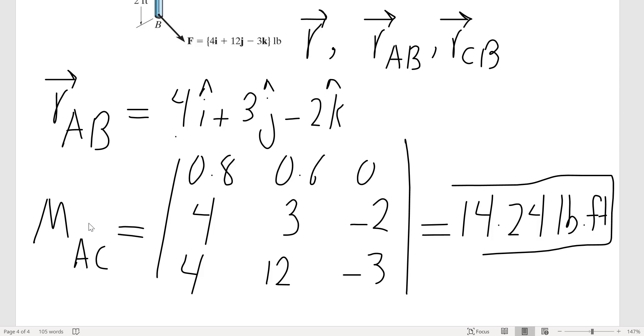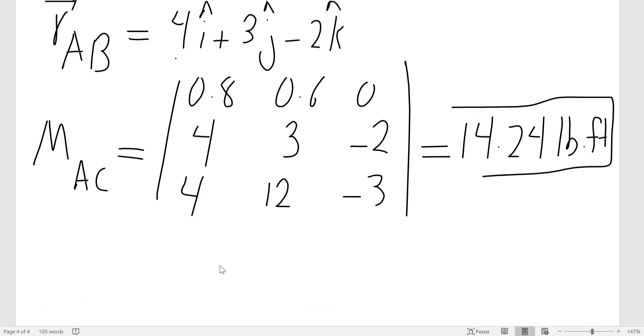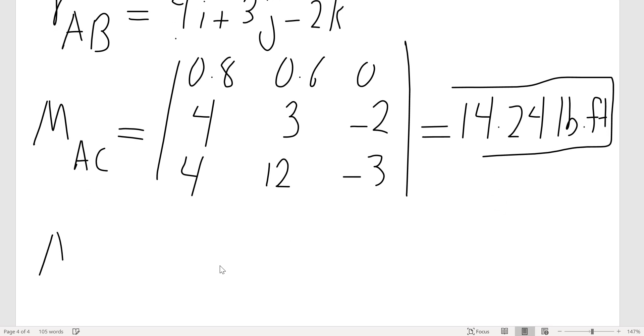That's the magnitude of the moment. If I want to find the moment in vector form, I just need to multiply it by its unit vector. So MAC would be UAC - I already found UAC, I don't need to find it again.